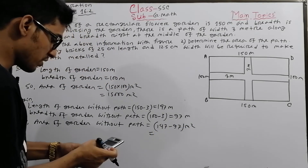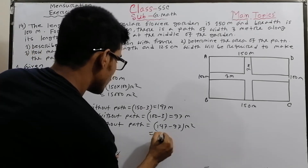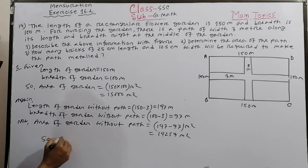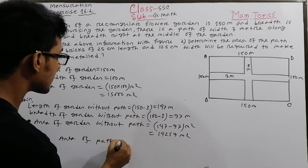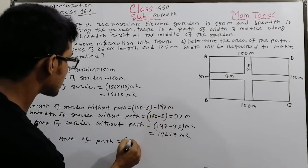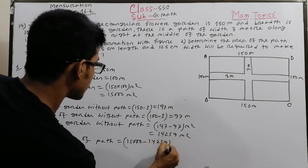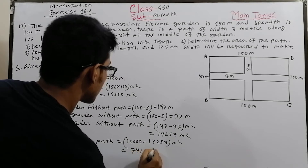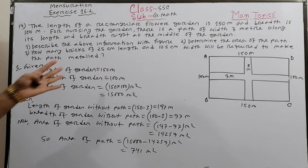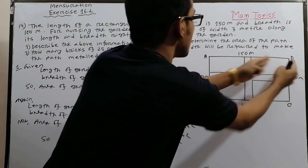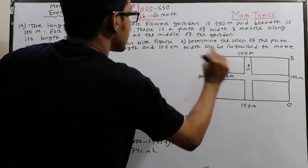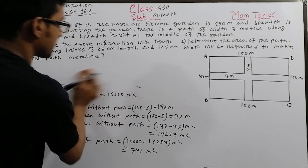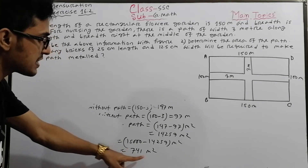Area of path equals area of garden minus area of garden without path, which equals 15,000 minus 14,259 equals 741 square meters. Let me verify: 15,000 minus 14,259 equals 741 square meters.